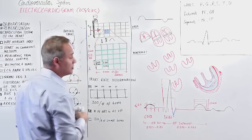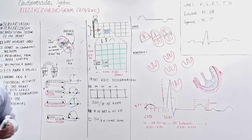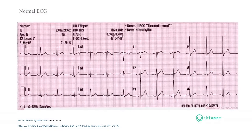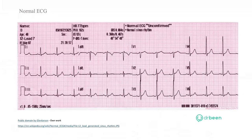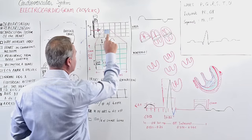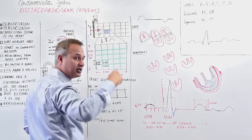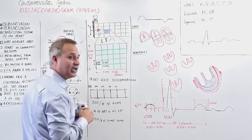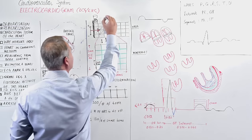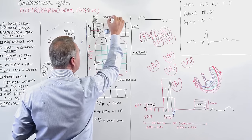Now let's look at the ECG paper. There are large square boxes, and each large box is further divided into smaller boxes. This paper is attached to a roll with a motor, and it moves at a speed of 25 millimeters per second. If one big box is 5 millimeters, then there are 5 big boxes per second — since 25 mm ÷ 5 mm = 5 boxes in one second.